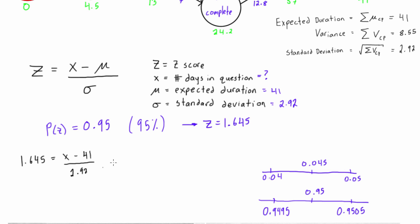If we rearrange that a little bit, we get 1.645 multiplied by 2.92, and we'll have to add 41, and that will return our x value. Just punching that in your calculator, our x value will be equal to 45.803.